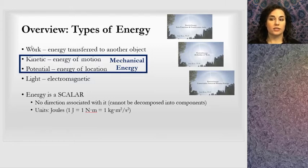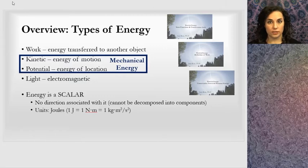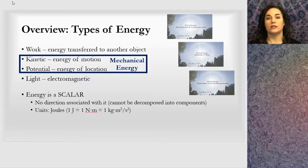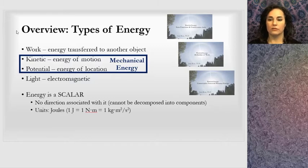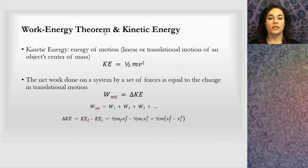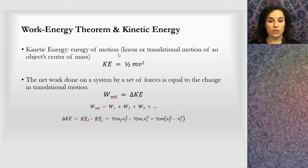Energy is a scalar, so we're not going to do anything vector with it — it's just a number. With energy, we need to keep track of signs, whether it's energy being added to a system or taken away. There's positive and negative. Our units are joules. Under the work-energy theorem, we need to take into account kinetic energy — energy of motion.